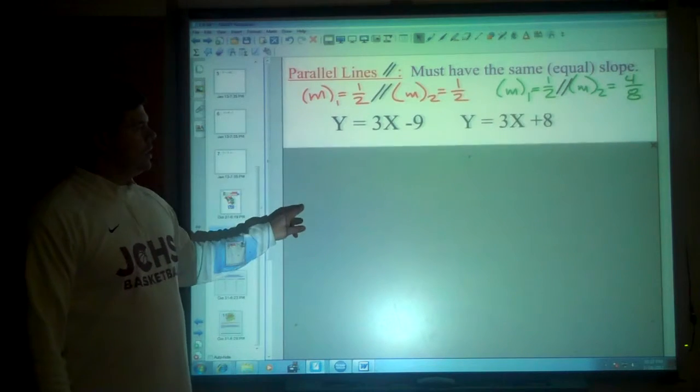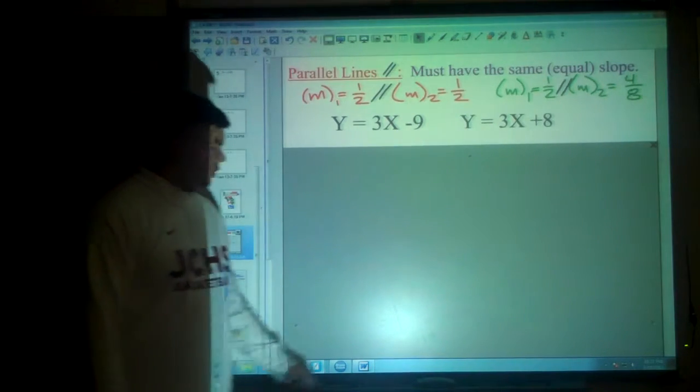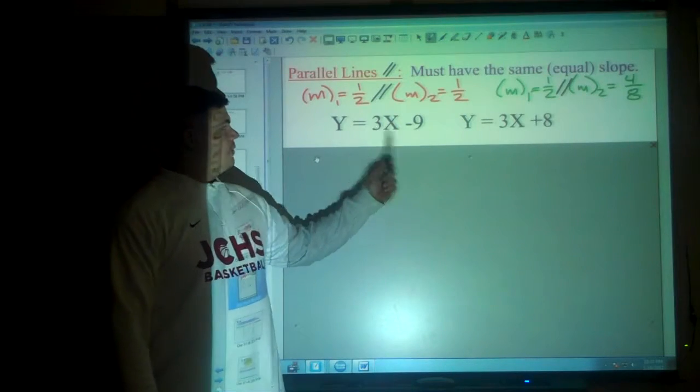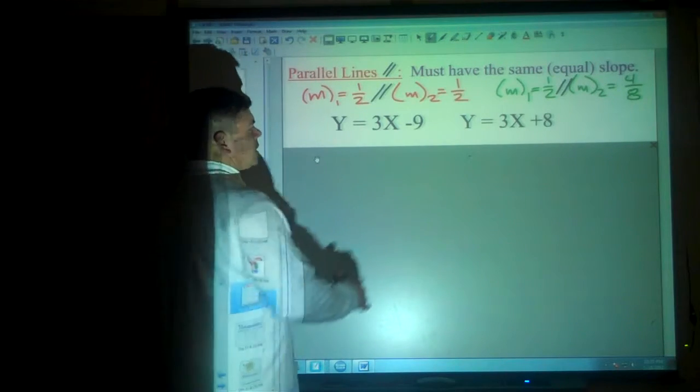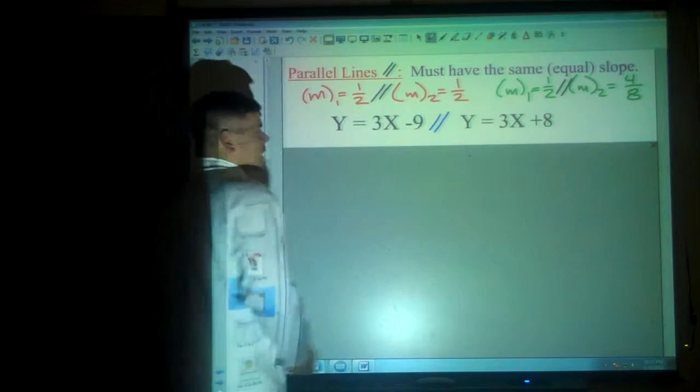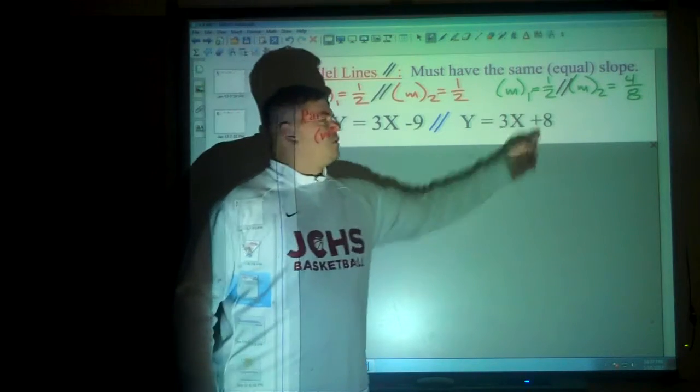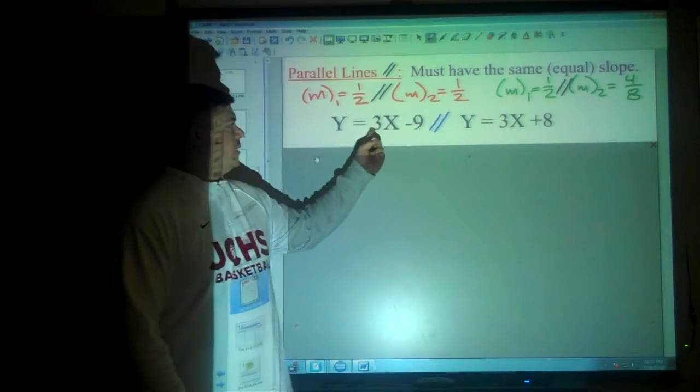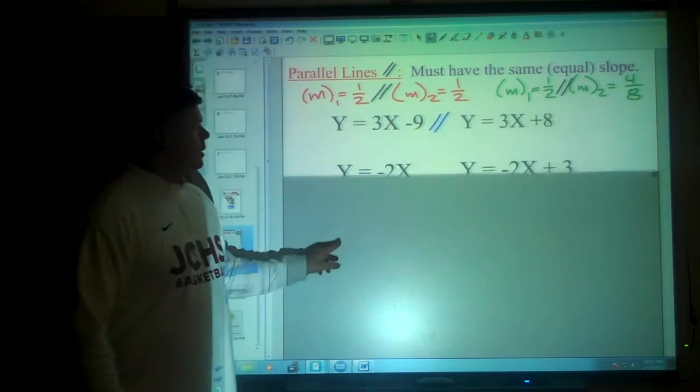Let's look at some more examples. Would you say these two have the same slope? Would you say they are parallel? Here's the slope of 3, here's the slope of 3. These two are parallel. Yeah, but the negative 9 and the 8 aren't the same. That doesn't matter. It doesn't matter if the y-intercepts are the same. What matters is the slopes.